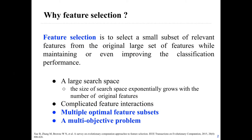A feature selection task is not an easy job because of the following reasons. Firstly, it has a large search space and complex feature interactions. More importantly, feature selection is a problem with multiple optimal feature subsets, and it is also a multi-objective problem. I will introduce these last two points in detail.